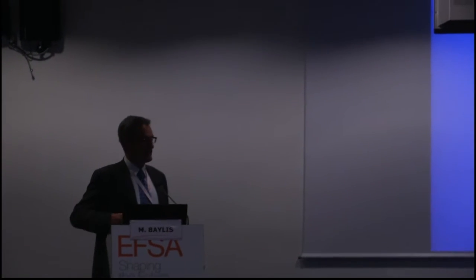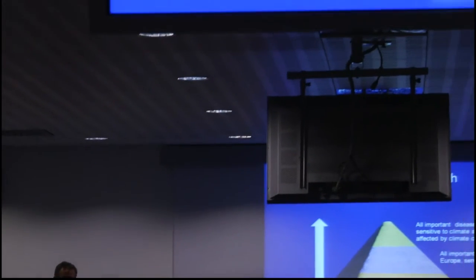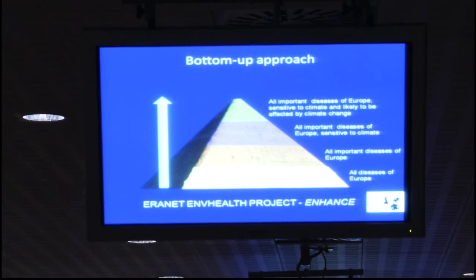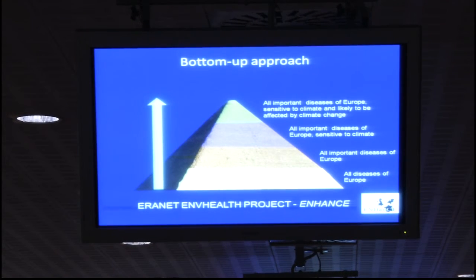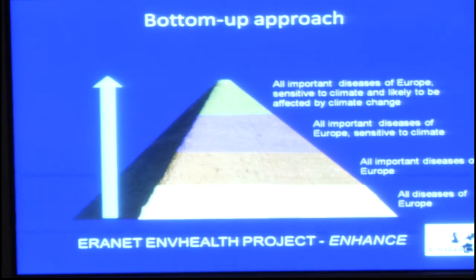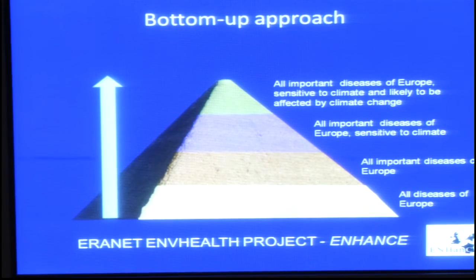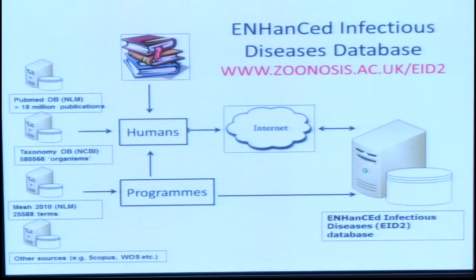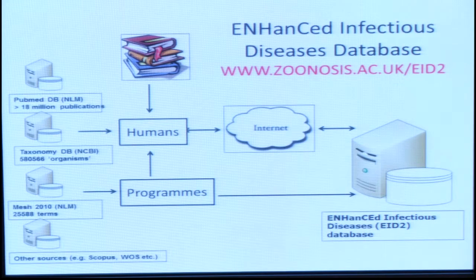In terms of sources of novel pathogens, this work arose from a project that I was leading a few years ago, where we wanted to look at the effect of climate change on the global burden of disease of animals and humans in Europe. We wanted to start with just a list of all of the diseases of humans and animals in Europe. We quickly discovered that list simply doesn't exist. So we set about producing our own database of pathogens, which we've called EID2, the Enhanced Infectious Diseases Database. We've used automated procedures to extract information from various sources without imposing our own biases.